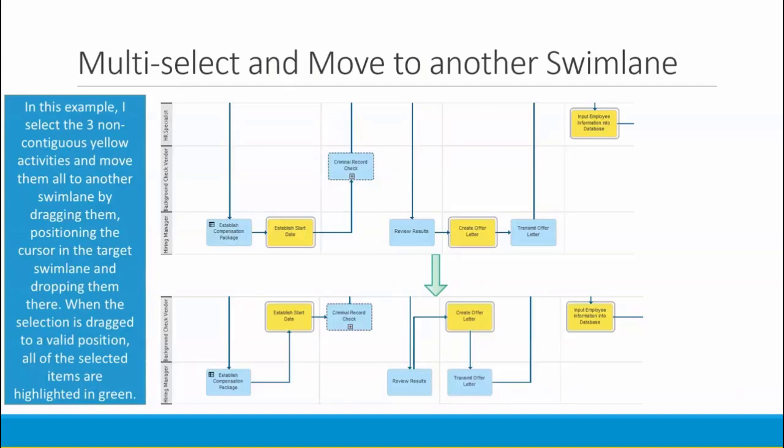Now let's look at moving a non-contiguous multi-selection. In this example, I've selected three non-contiguous yellow activities and moved them all to another swim lane. I did this by dragging the selection, positioning my cursor on the target swim lane — background check vendor — and dropping them. When the selection has been dragged to a valid position, all of the selected items will be highlighted in green.